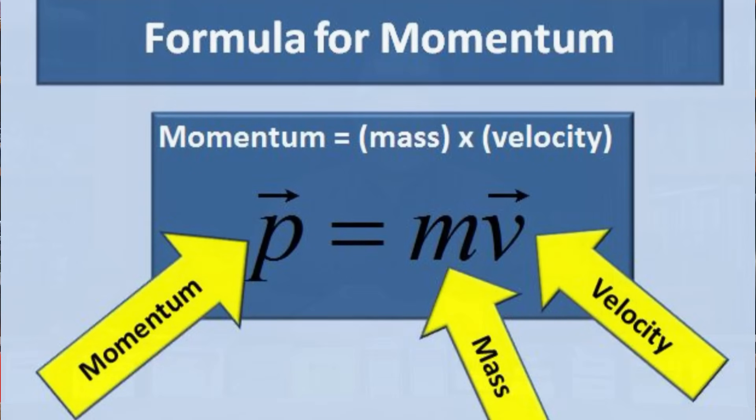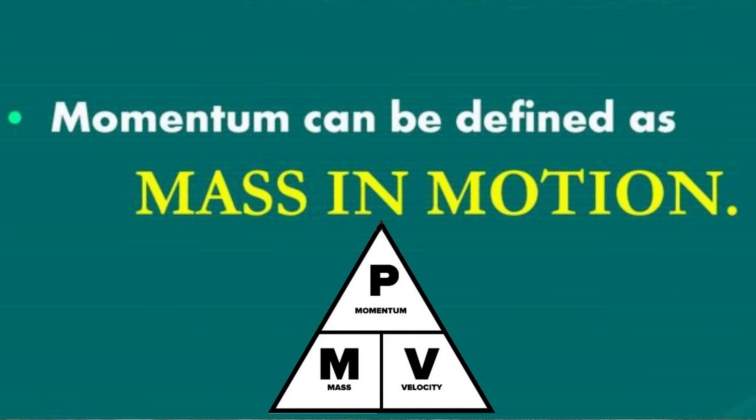Mass gives a bullet momentum. Kinetic energy has only a magnitude, but momentum has both a magnitude and a direction — it's a vector quantity. After your bullet hits an animal and enters it, kinetic energy becomes less important and the momentum of the bullet tends to take over as it continues traveling through. A heavier bullet at the same velocity will always penetrate deeper due to momentum. Bonded and mono-metal bullets retain more mass after the initial impact, allowing for even deeper penetration.